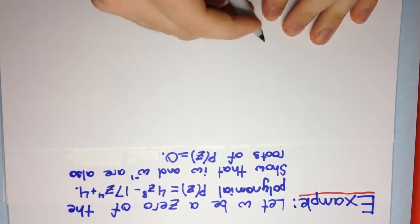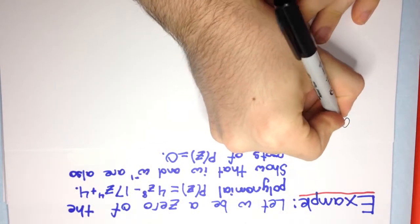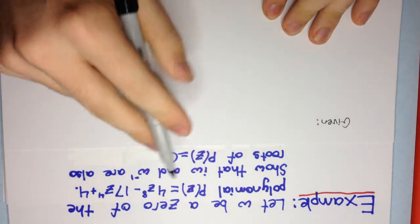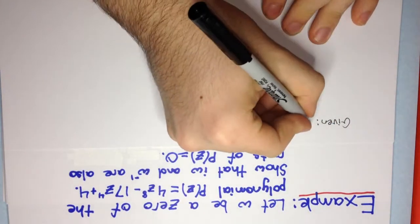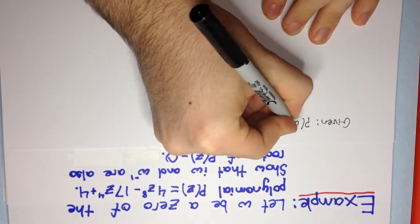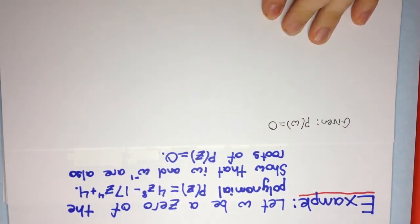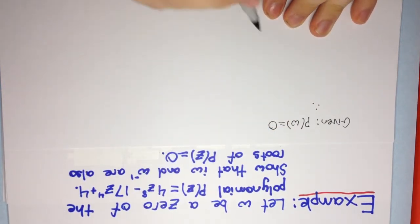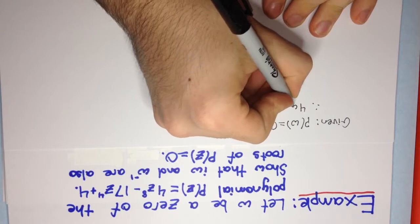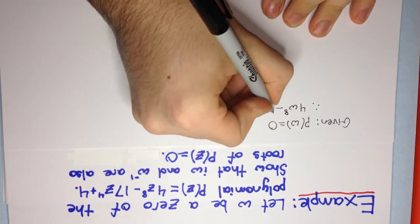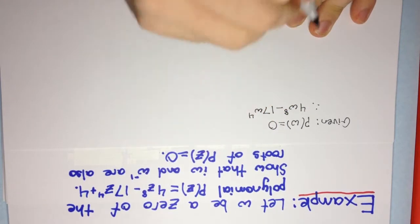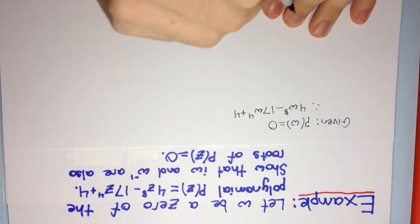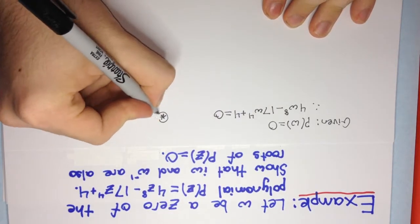We are given that ω is a zero of the polynomial. So, what does that mean? That means p(ω) = 0. Substituting ω into the polynomial, we get 4ω⁸ - 17ω⁴ + 4 = 0. Let's call that the starred equation (★).